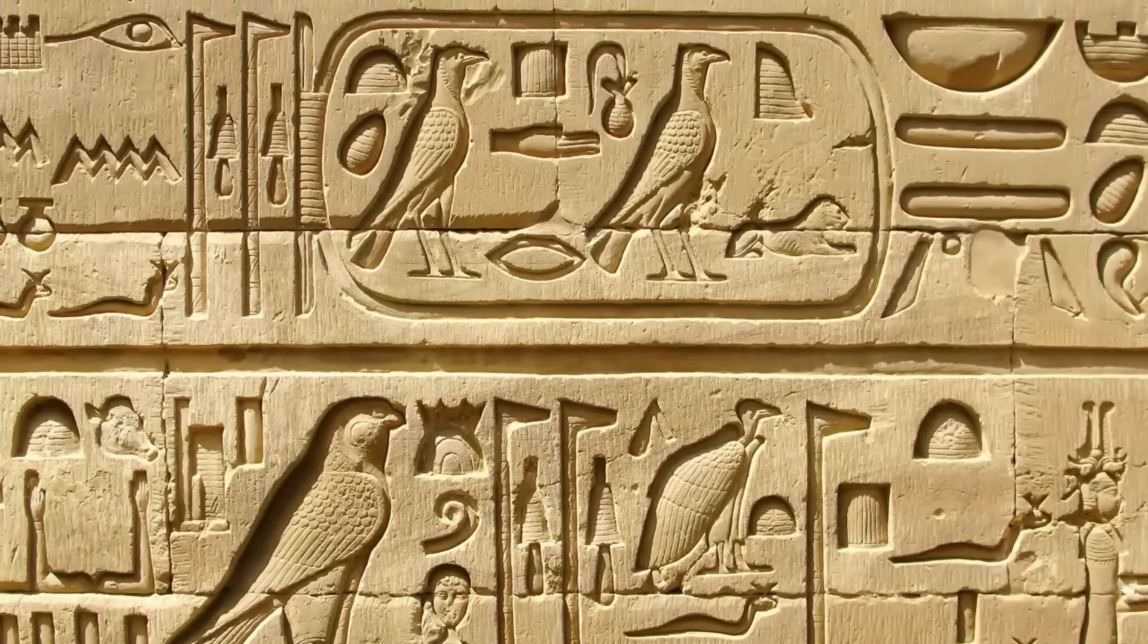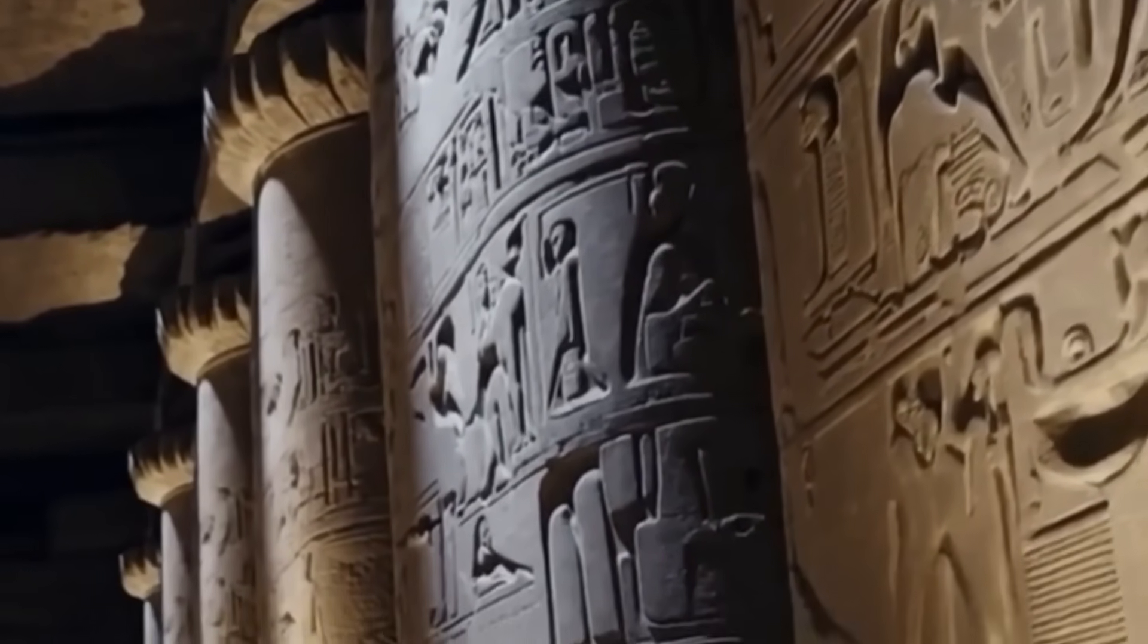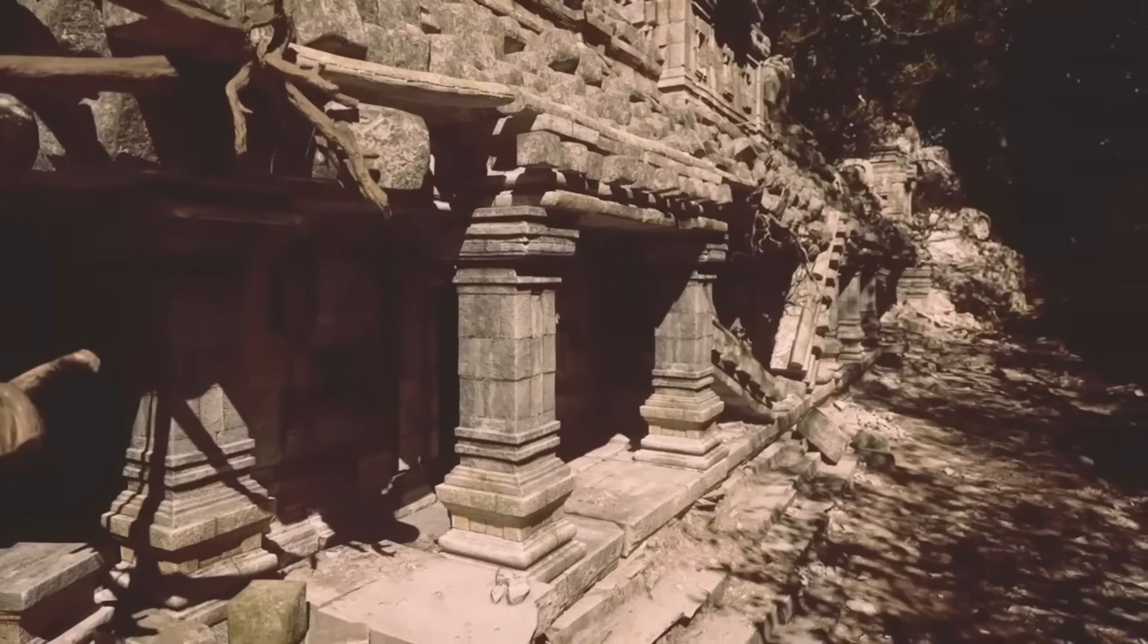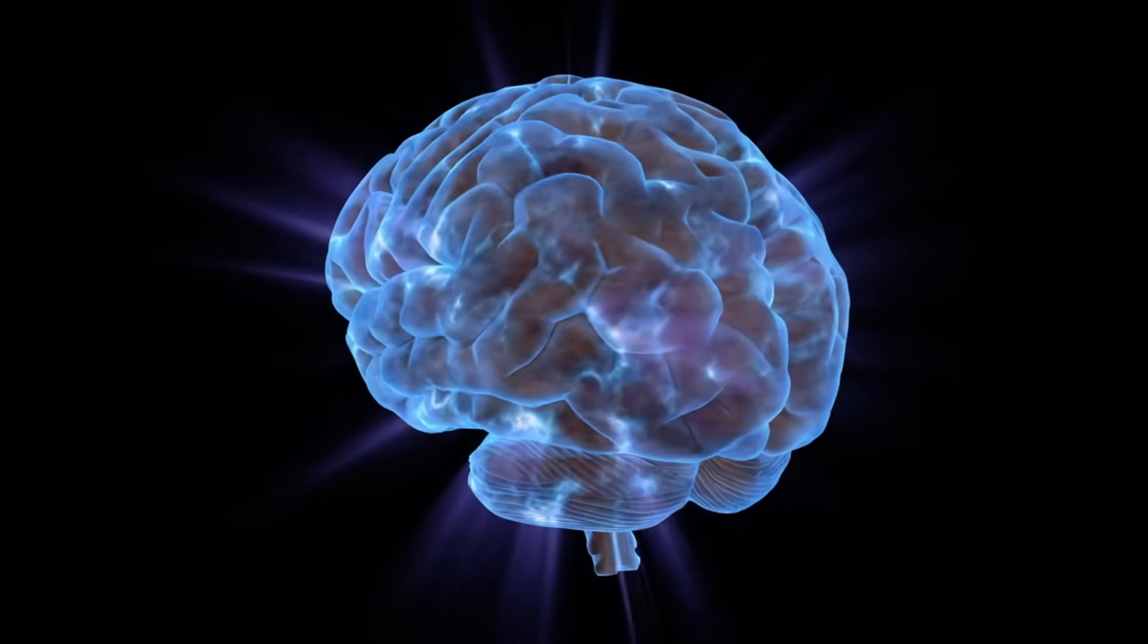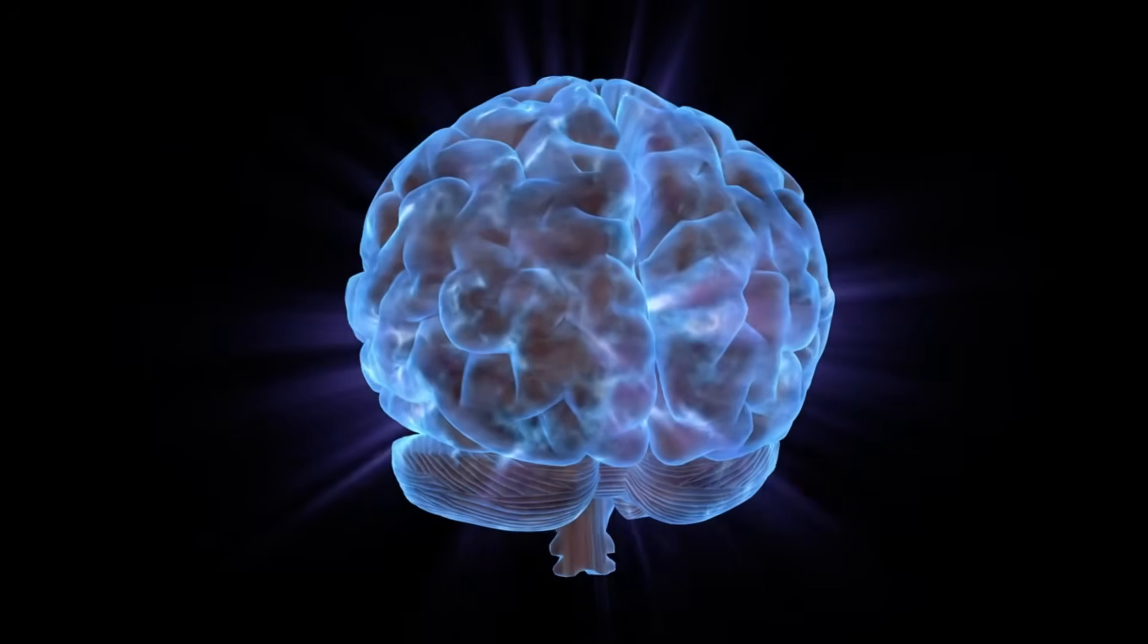The facial symmetry, structure, and ratios echoed archetypes humanity has carried for millennia. Could this be coincidence? Or are certain symbols so fundamental they appear across minds, machines, and quantum noise?